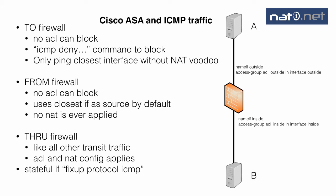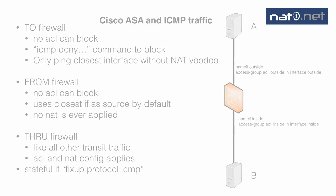To conclude: traffic to the firewall is normally allowed and cannot easily be blocked. Traffic from the firewall is also normally allowed. Traffic through the firewall for ICMP is the same as TCP or UDP, except by default it is not handled statefully. If you add fixup protocol ICMP and want to ping from B to A, you allow outbound ICMP in the inside access list and the return traffic from A to B will automatically be allowed regardless of the outside access list because the firewall is stateful. Thanks for watching — please visit netzero.net for more videos and information about network security.